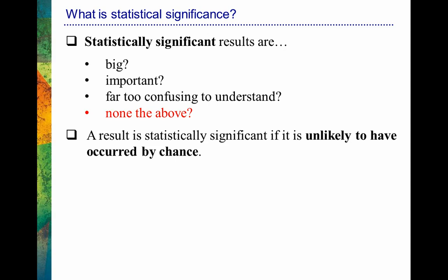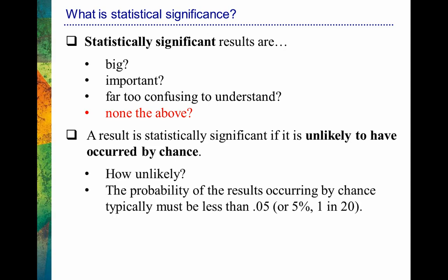Now that will bring up some other interesting questions — like how unlikely do those results need to be? Well, we have some conventions put in place, some cutoff points. For example, the probability of results occurring by chance typically needs to be less than 0.05, or 5%, in order to be considered statistically significant. And when you're talking about 5%, you're talking about like one chance in 20.